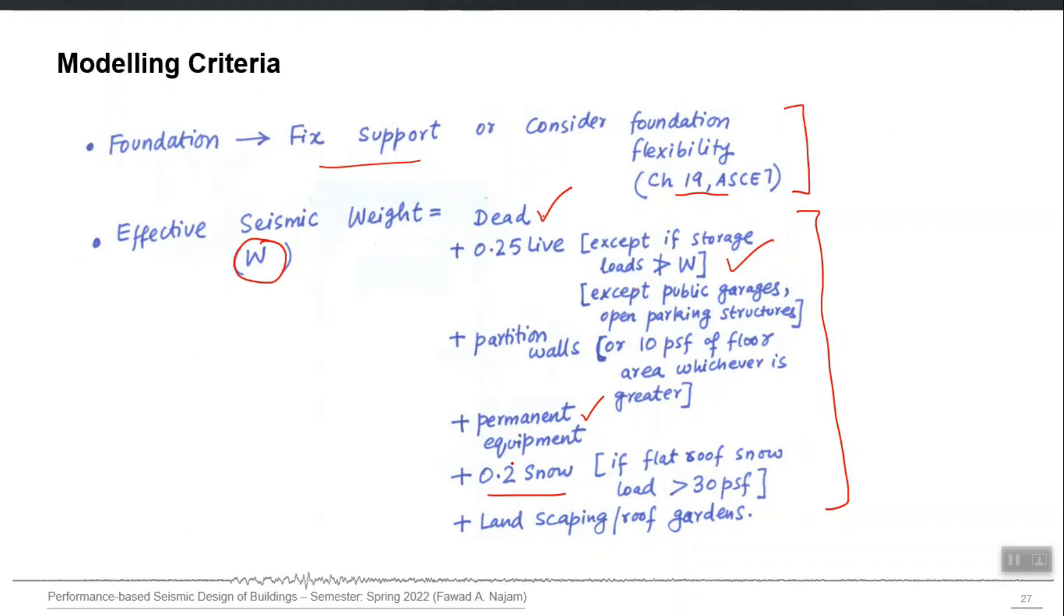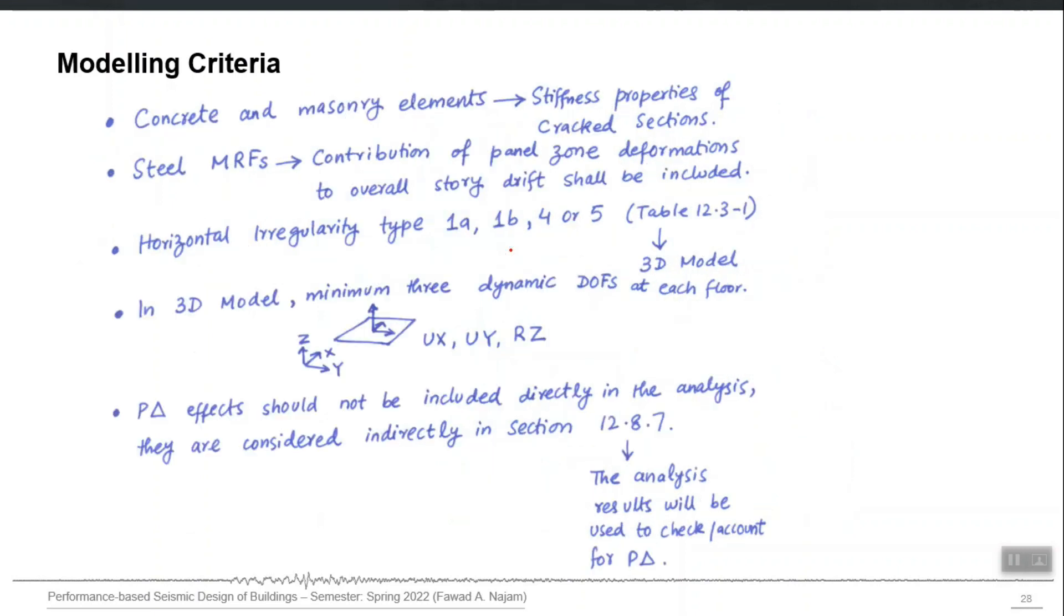You sum all of those things, you get capital W which is called the seismic weight. It is different than the actual self-weight of the building. This is an approximation of what weight will be there when the seismic forces hit your structure.